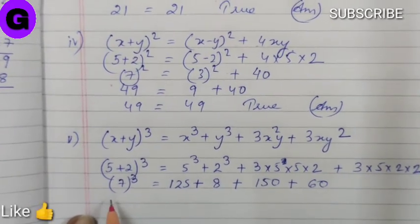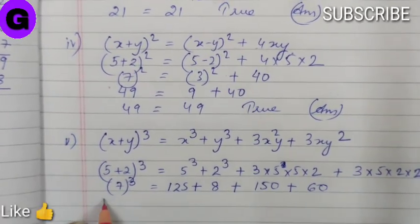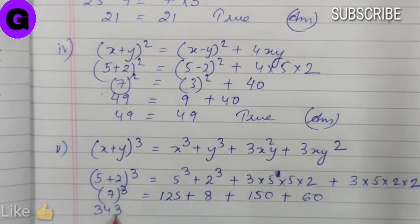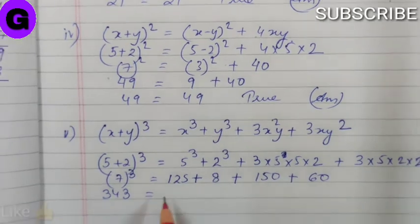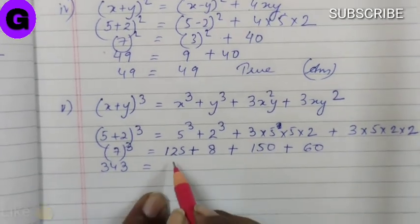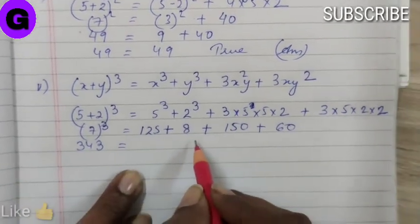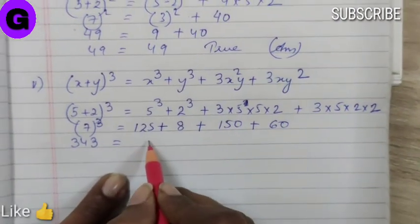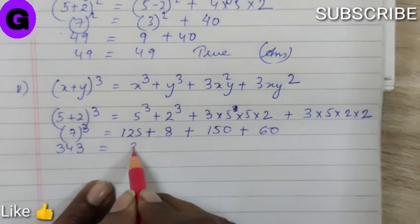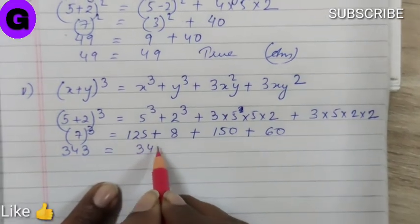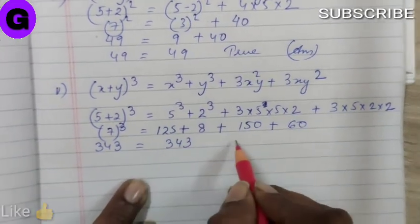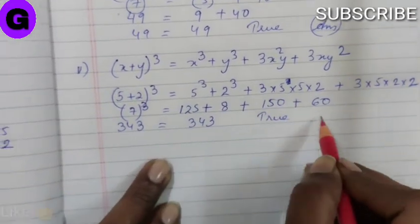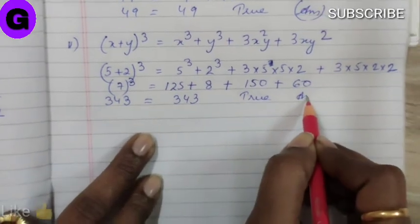7 sevens are 49, 49 sevens are 343. After adding all terms we get 343. That means they are equal. This has been verified.